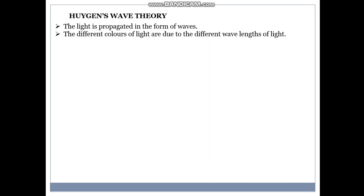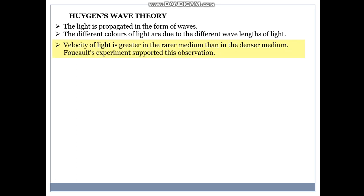So Huygens wave theory, the light is propagated in the form of waves. The different colors of the light are due to different wavelengths of light. Velocity of light is greater in rarer medium than in denser medium. This is one of the major advantages.